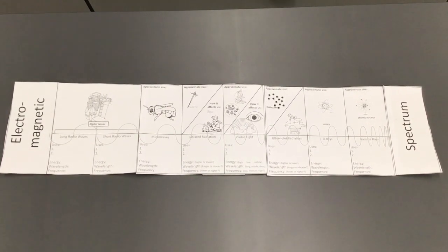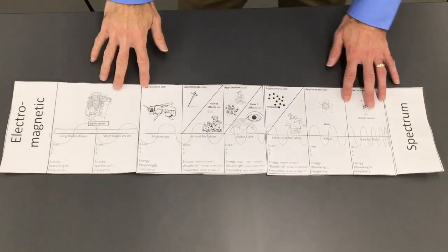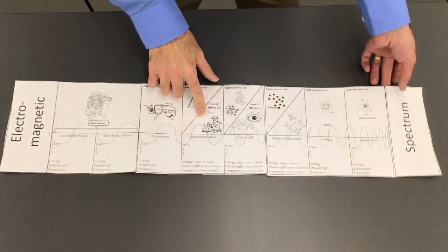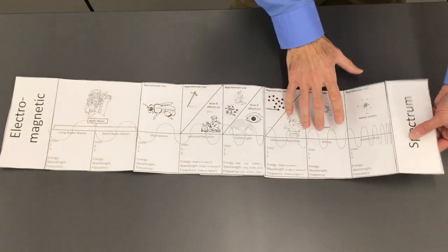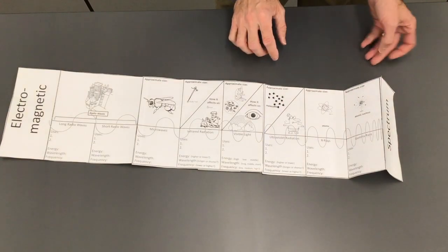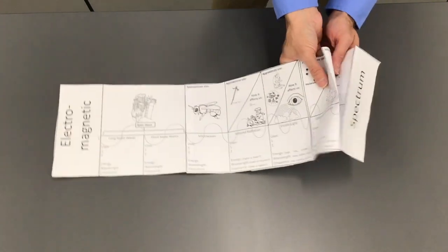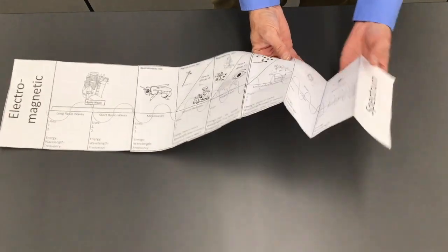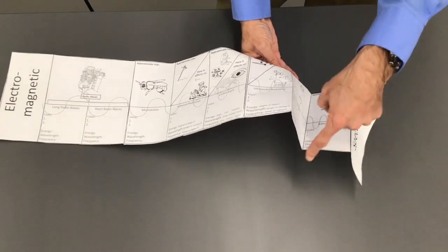Here's how you fold the electromagnetic spectrum foldable so it fits into your notebook. First of all, when you're folding things, there are two types of folds. There's something called a mountain fold, which folds up like this, and then there's something called a valley fold, which is like this.